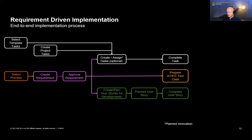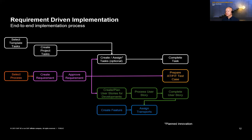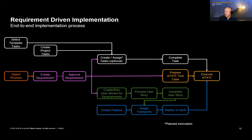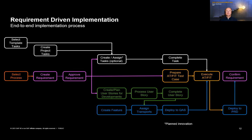After tasks are completed, we handle deployment: what has been built in a user story is captured in a transport that is assigned to the feature. For testing, you deploy the code or customizing into the QAS system to be able to execute acceptance tests or functional integration tests. If testing is successful, you deploy the code to production and confirm the requirement as completed.